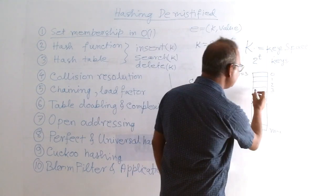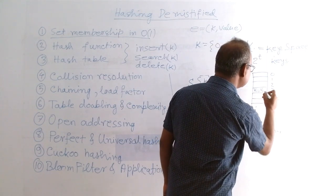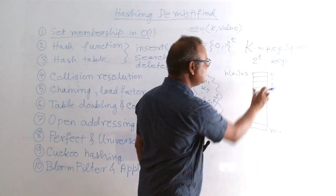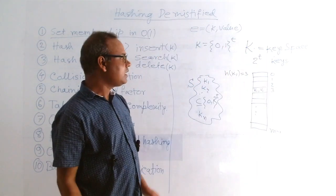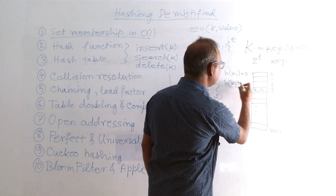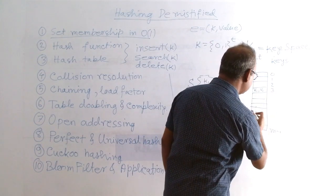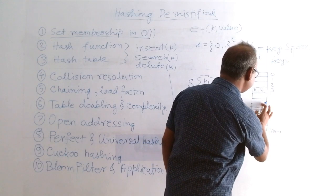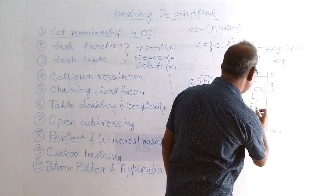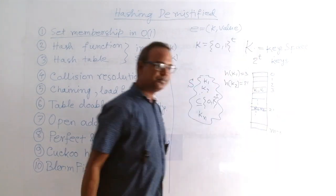So we are going to put k1 - let's say I am writing value by v - k1, v1. Similarly, for k2, h of k2, let's say this is 21. 21 will be somewhere here. So we will write k2, v2 here.